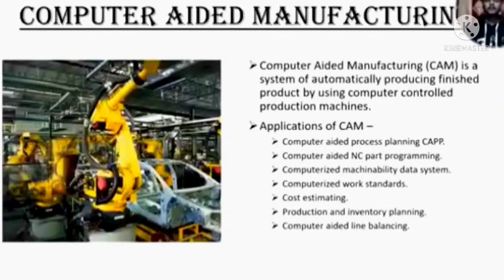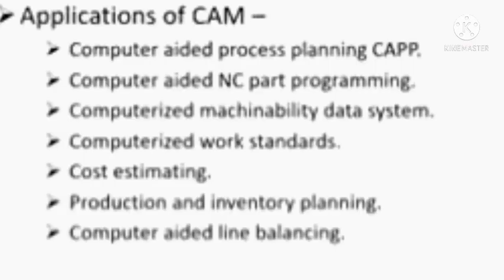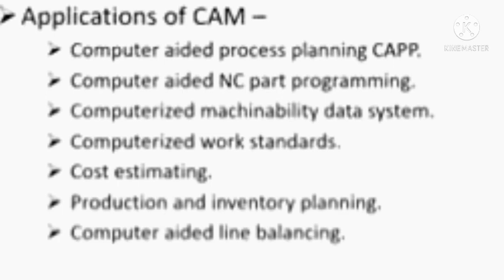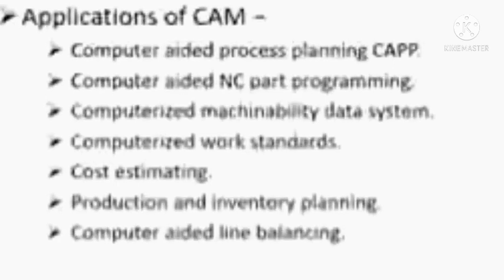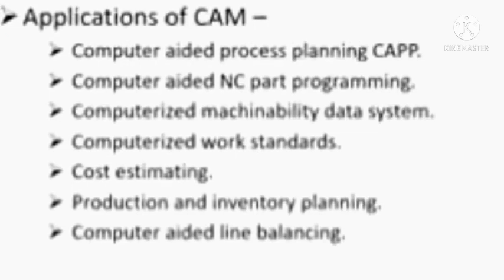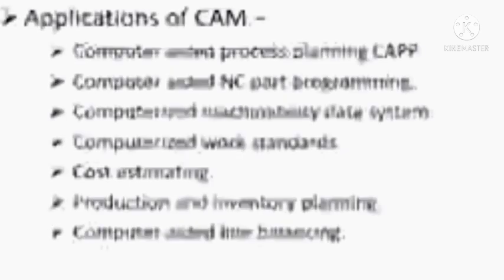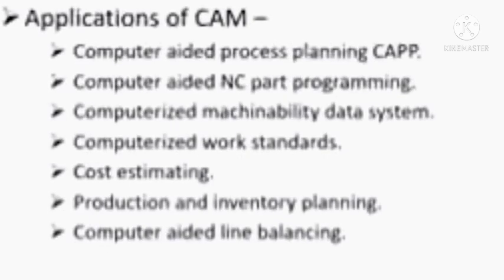The next one is computer-aided manufacturing, CAM. CAM is a system of automatically producing finished products by using computer-controlled production machines. Applications of CAM are computer-aided process planning (CAPP), computer-aided NC part programming, computerized machinability data systems, computerized work estimating or cost estimating, production and inventory planning, and computer-aided line balancing.